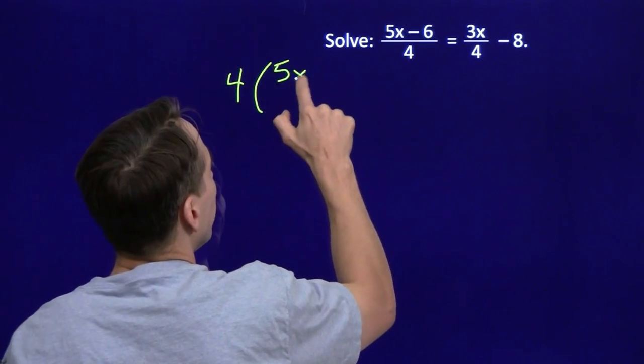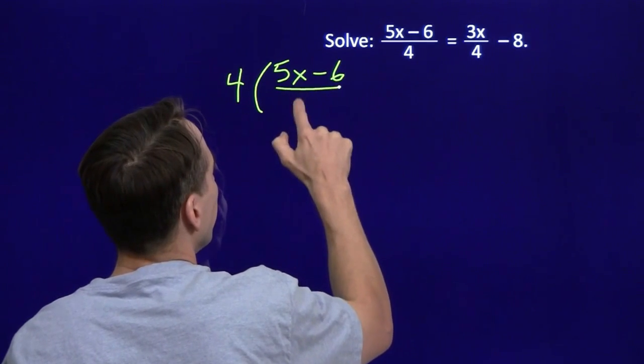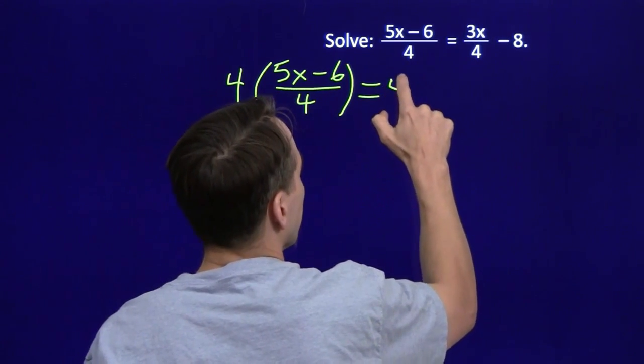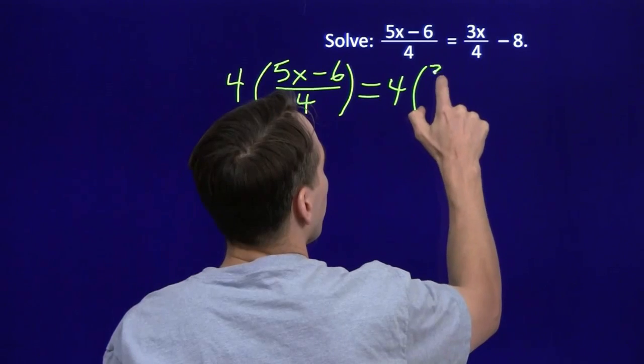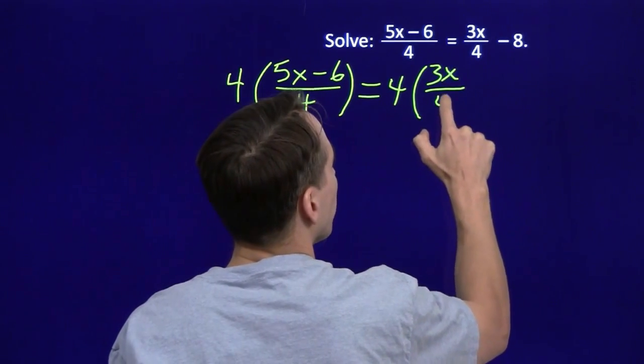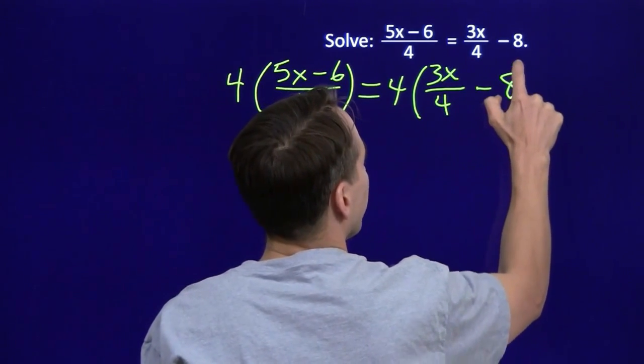Multiply the left by 4, and of course, if you do it to the left, you have to do it to the right. Can't play favorites. Multiply both sides by 4, and the plan is knock out the fractions.